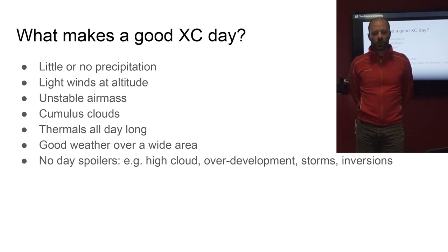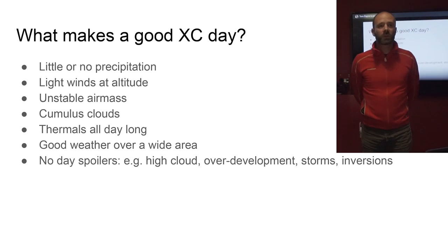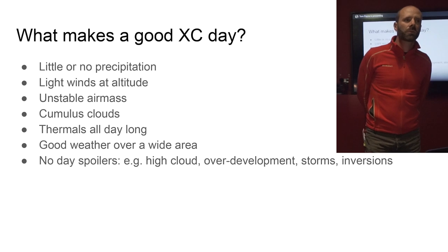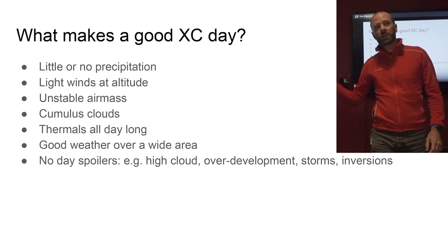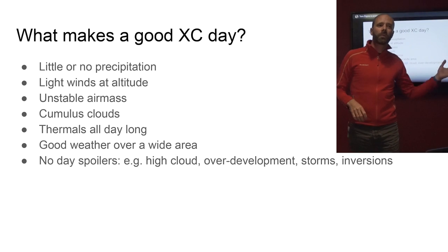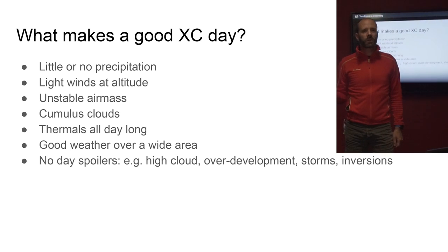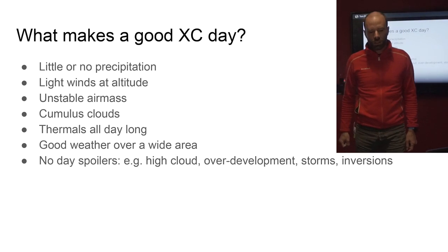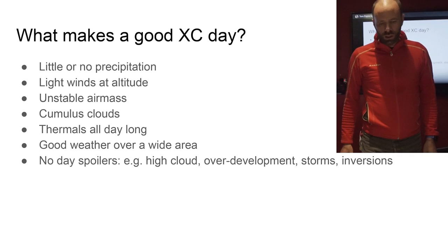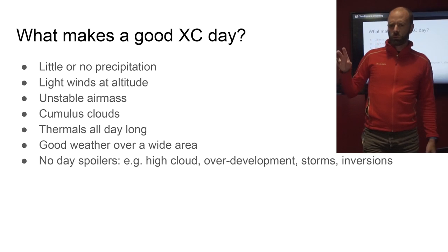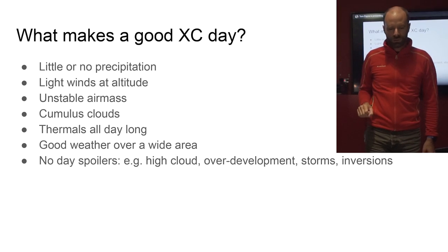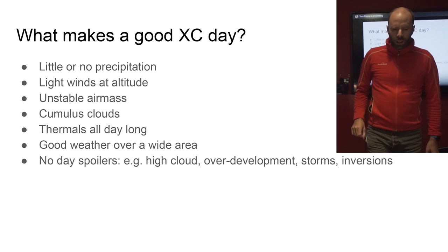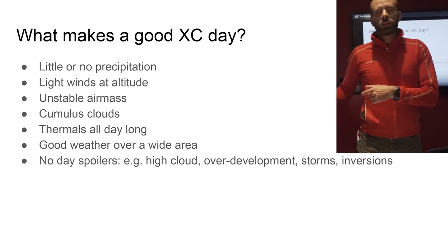What makes a good XC day? If you're flying XC there are a few obvious things to look for: little or no precipitation. On the other hand, a little bit of precipitation — if it says showers in the afternoon or overdevelopment on high ground — that's actually a good sign that the thermals are going to be good. One rule of thumb: once the temperature at cloud tops reaches minus 10 degrees, you start to get showers.